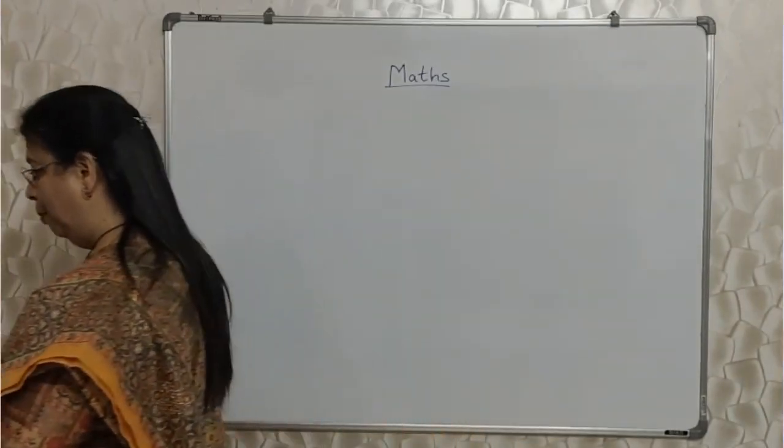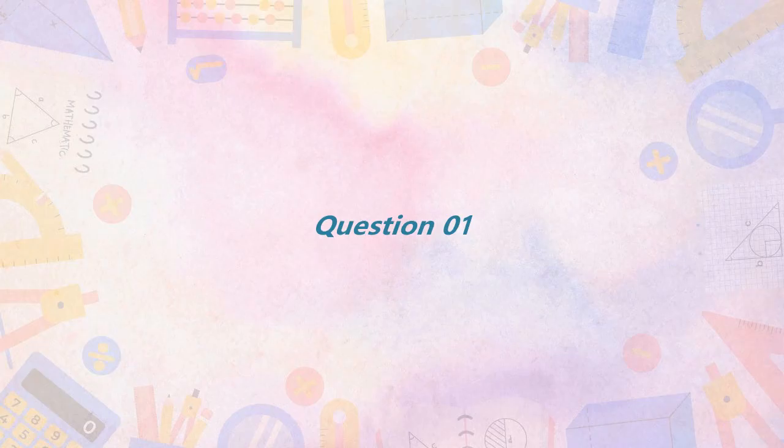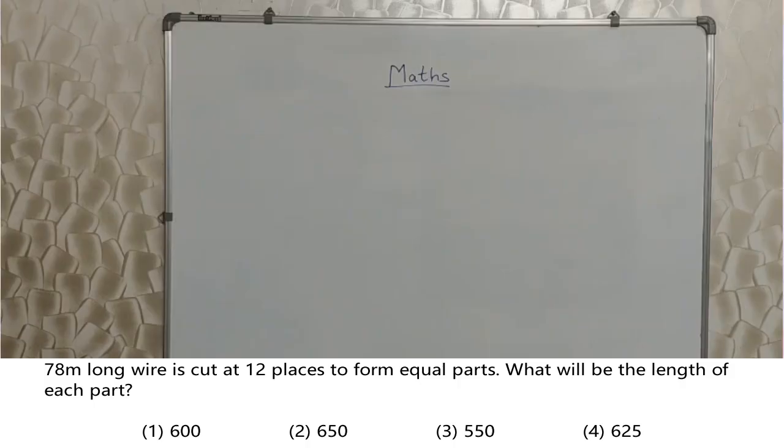Chalo, start karte hai bachalo. First sum will appear on screen. 78 meter long wire is cut at 12 places to form equal parts. What will be the length of each part?